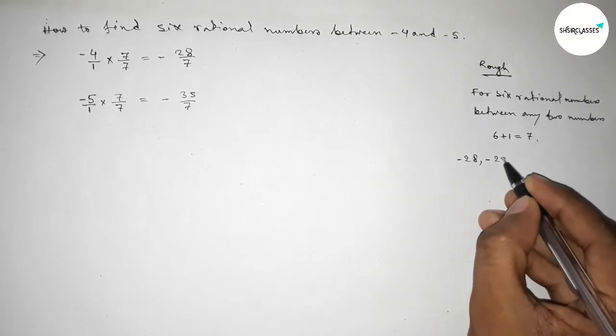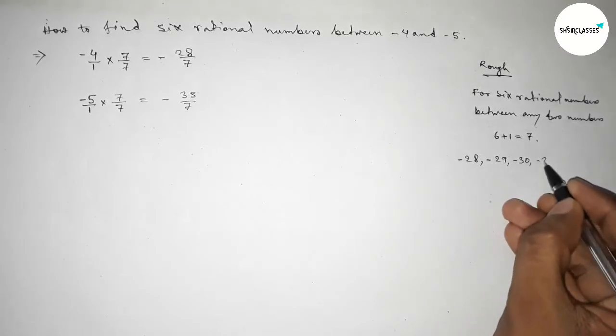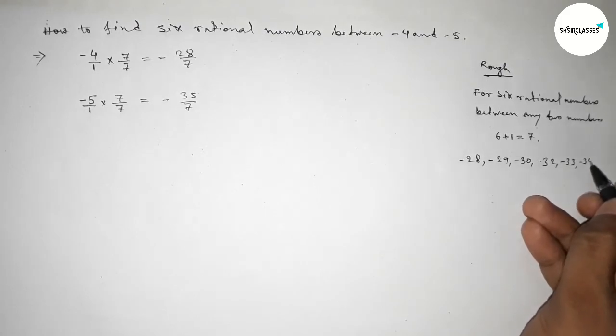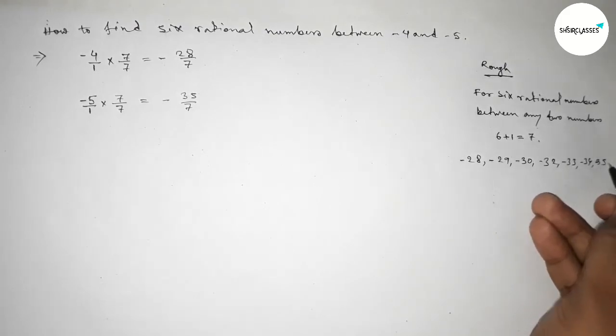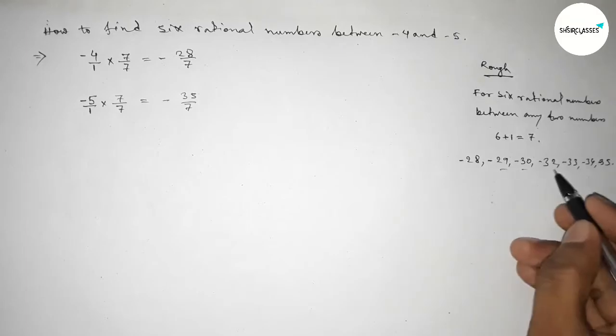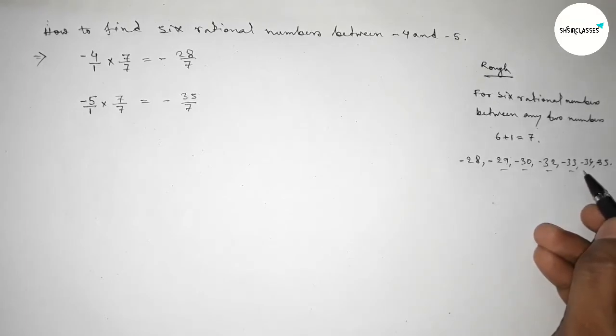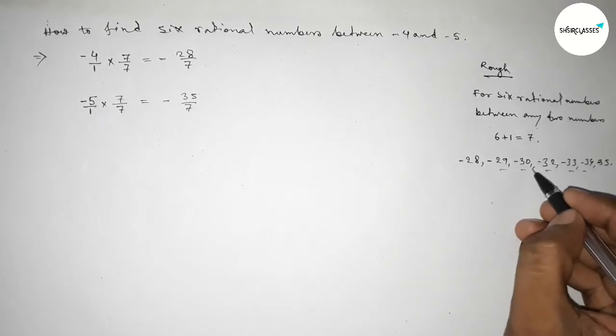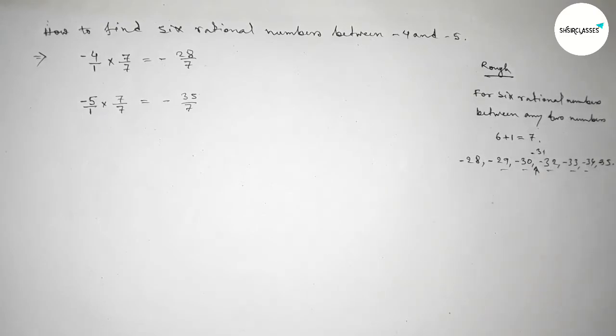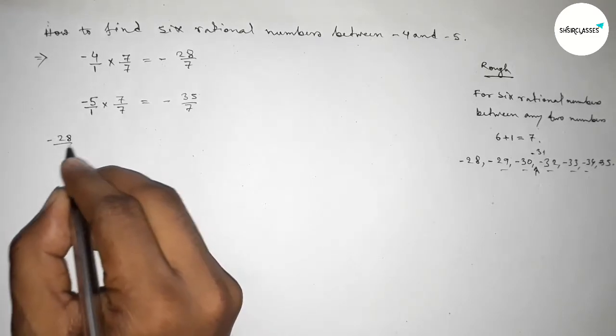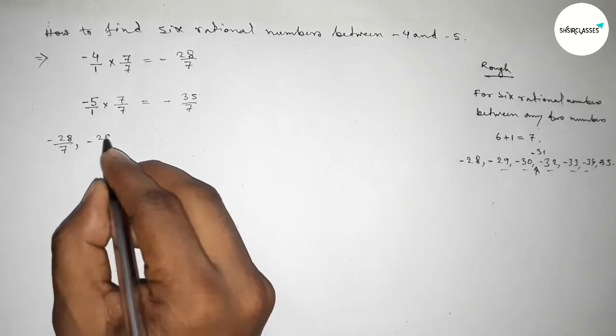So here write down 6 negative integers. Sorry, here one rational number is missing, this is minus 31. Now forming all the rational numbers here, so first one minus 28 over 7, minus 29 over 7, minus 30 over 7, minus 31 over 7.